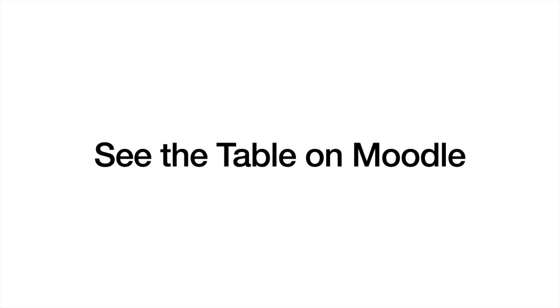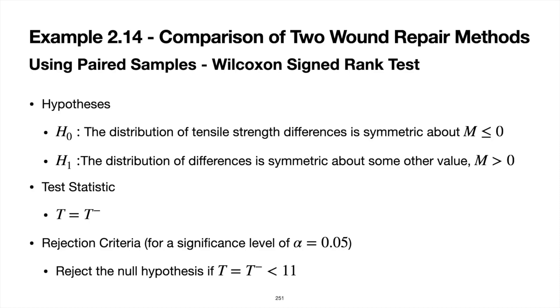We have a sample size of 10, we're performing a one-sided test, and we want a significance level of 0.05. According to the table, the critical point is 11. We will reject the null hypothesis if our test statistic T-minus is less than 11.